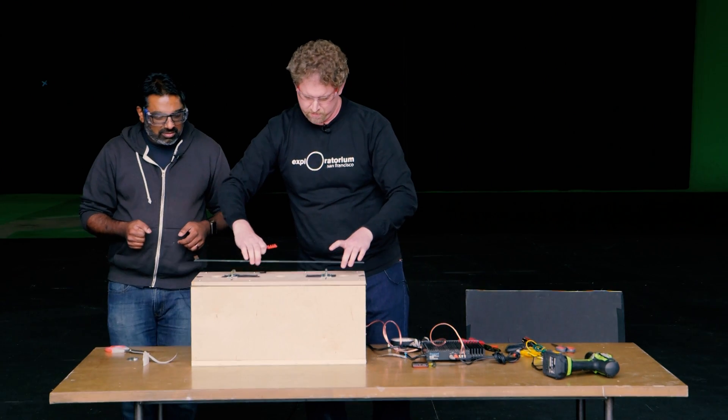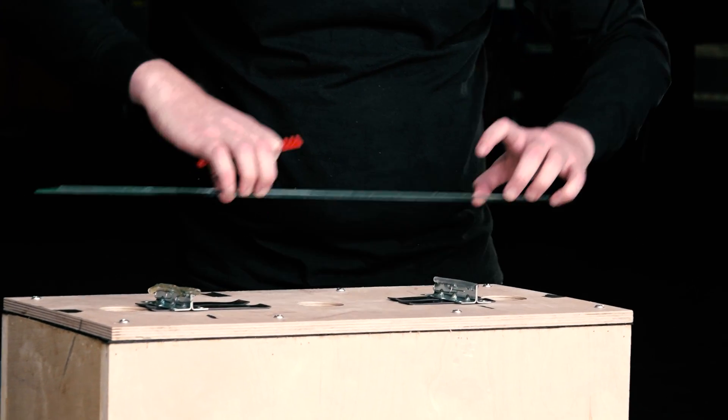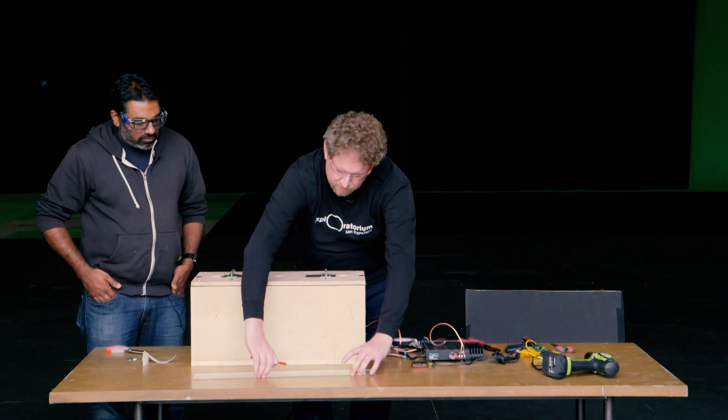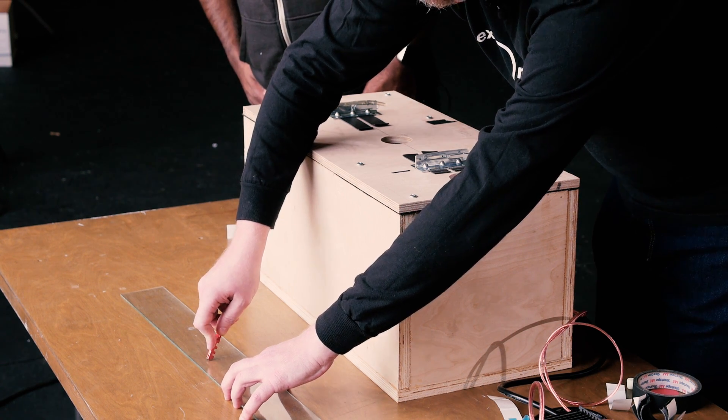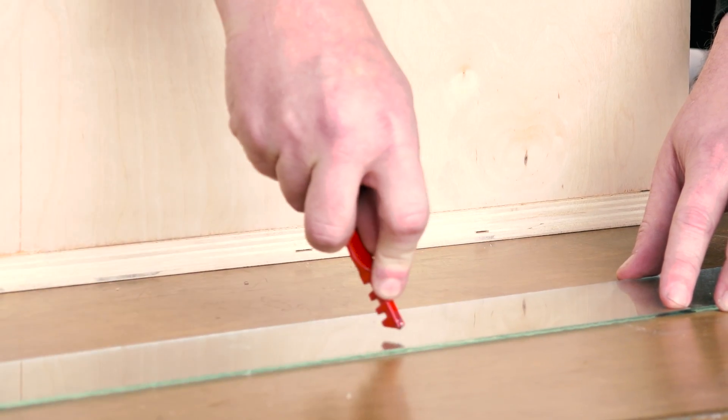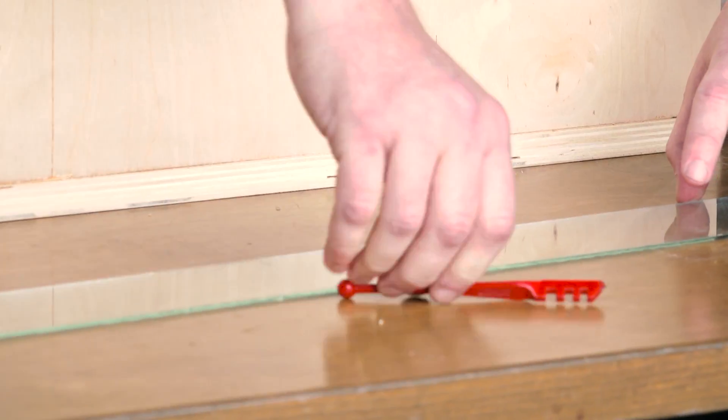But we can give it a place for it to start its motion. So we can give it a little score. And this is just a simple glass cutter. So we'll just give it a couple of little scores on it.